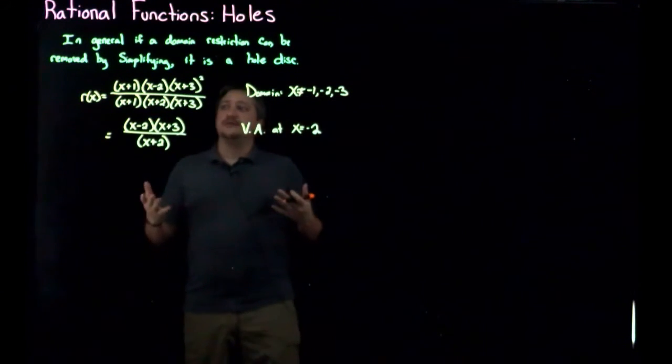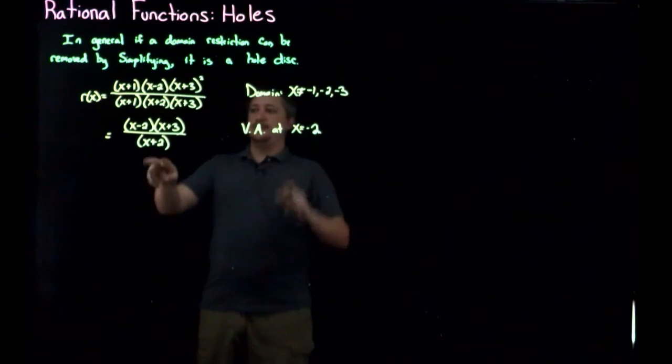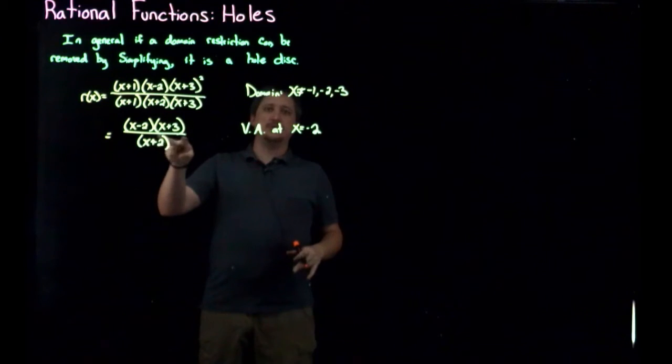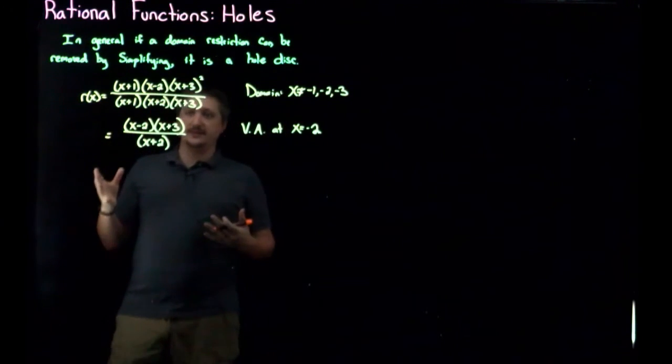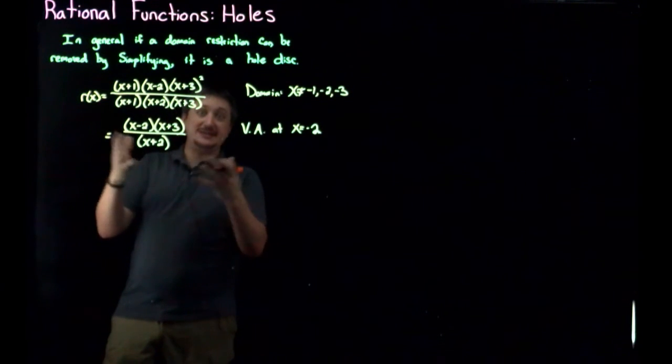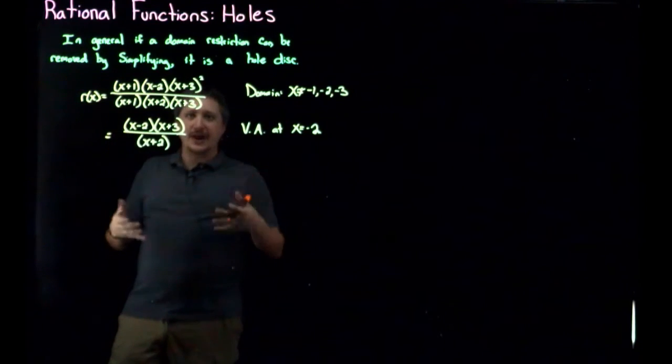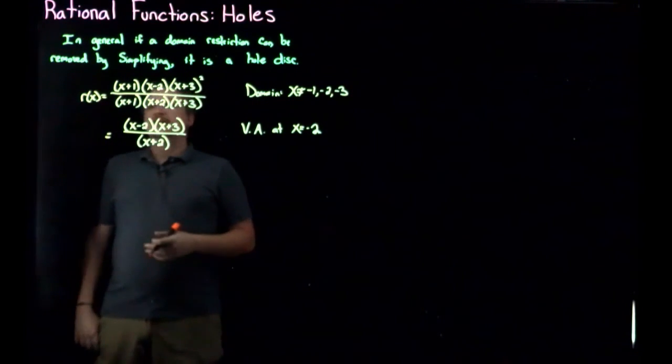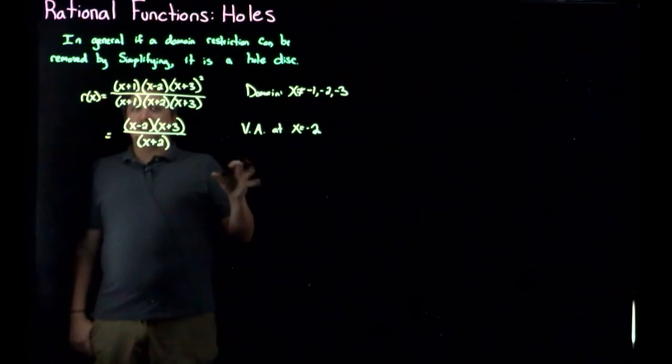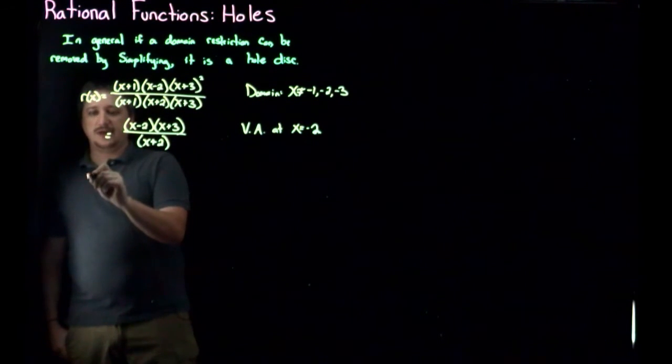The hole discontinuities though are what happens to the other things. So negative one and negative three no longer appear to be domain restrictions. So what I do is I need to test this because I may just not see that that is the case. There might be like weird factors in here that end up making it happen, although this is a very nice example so that's not the case. But there's also another reason to check, which I'll explain in a second.